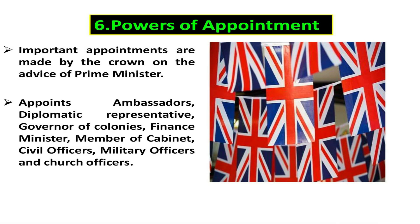Number six, powers of appointment. Important appointments are made by the Crown on the advice of the Prime Minister. He can appoint ambassadors of the country, diplomatic representatives, governor generals of dominions, governor generals of colonies, the finance minister, members of cabinet, civil officers, military officers and church officers.